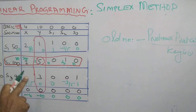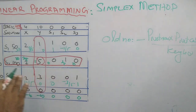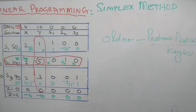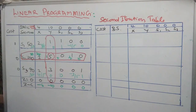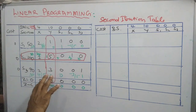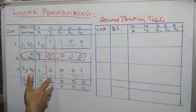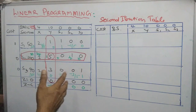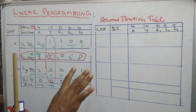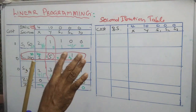Now I am going to exhibit this adjusted table once more. The second iteration table is illustrating from this mixed table — figures are mixed here — so I am exhibiting the second iteration table clearly.